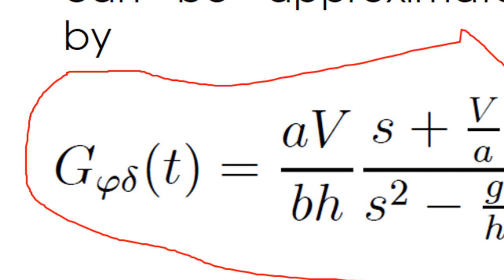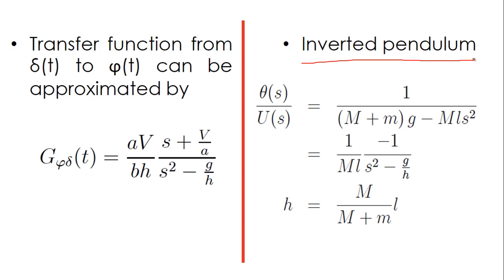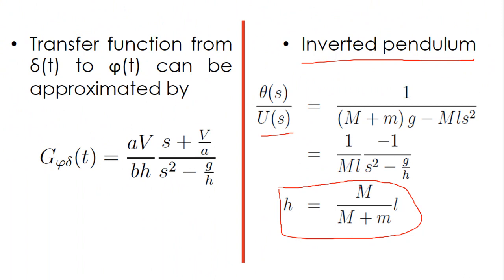I would like to compare the transfer function of this bicycle model with the transfer function of the inverted pendulum. For the inverted pendulum, theta is the angle and u is the force applied to the cart to stabilize theta. You can see that if you define h appropriately, the denominator in the inverted pendulum and the denominator in this bicycle model are exactly the same. So both systems can be written with the same type of denominators — this is very interesting.